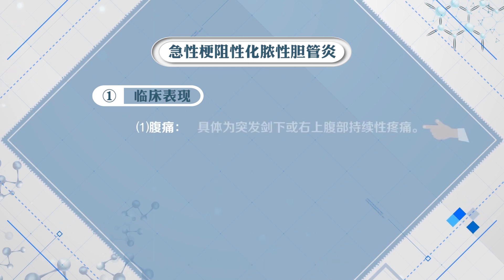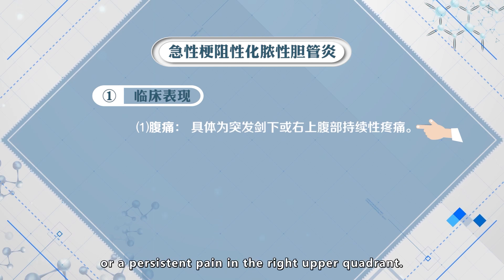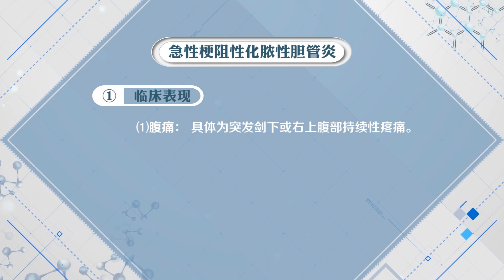The specific manifestations include: 1. Abdominal pain — a sudden pain below the xiphoid or persistent pain in the right upper quadrant.